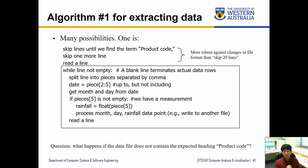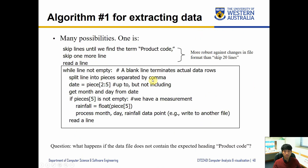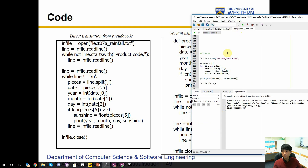What happens if the data file does not contain the expected heading 'product code comma'? That makes it really interesting. We'll revisit that question. The previous pseudocode is now converted into Python code. If you want, we can create a function that handles some repeated processing, and then put other logic into the main function.